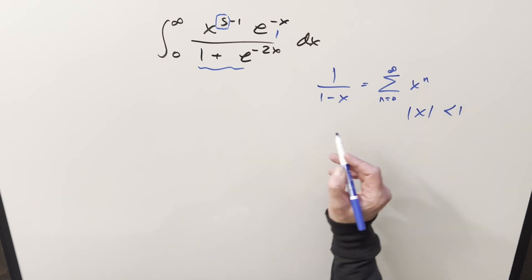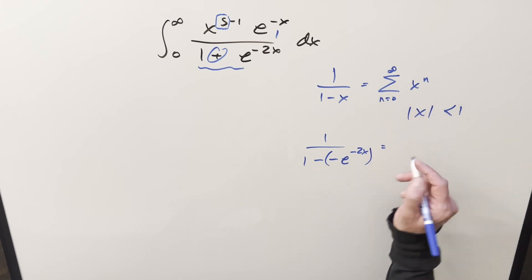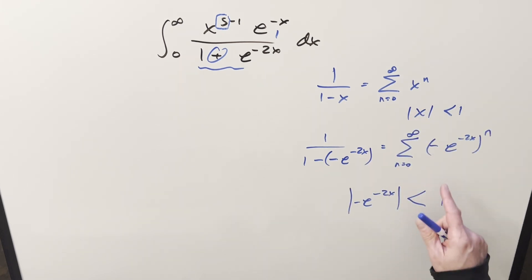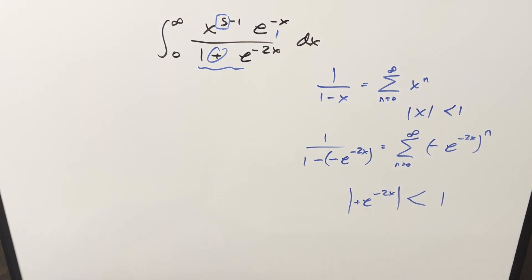So let me take our expression here and try to put it in this form. We'll write it as 1 minus minus e to the minus 2x. And then this right here is going to be my input into this formula. So what we're going to need for this to converge is just the absolute value of minus e to the minus 2x needs to be less than 1. The minus isn't going to matter inside the absolute value. But notice this is going to be no problem with our bounds always positive 0 to infinity.